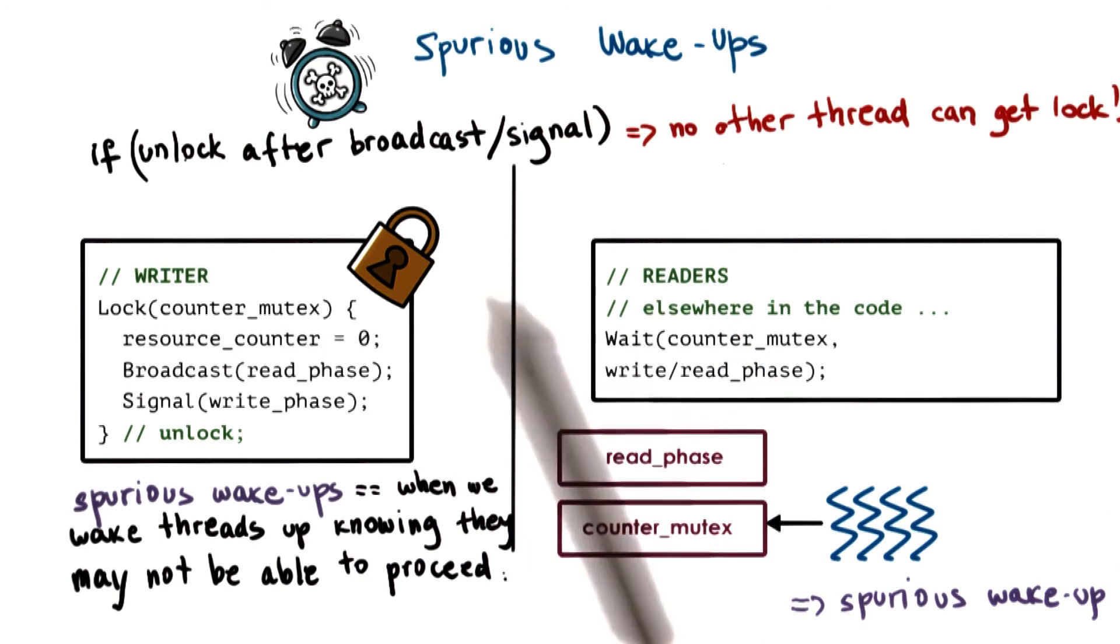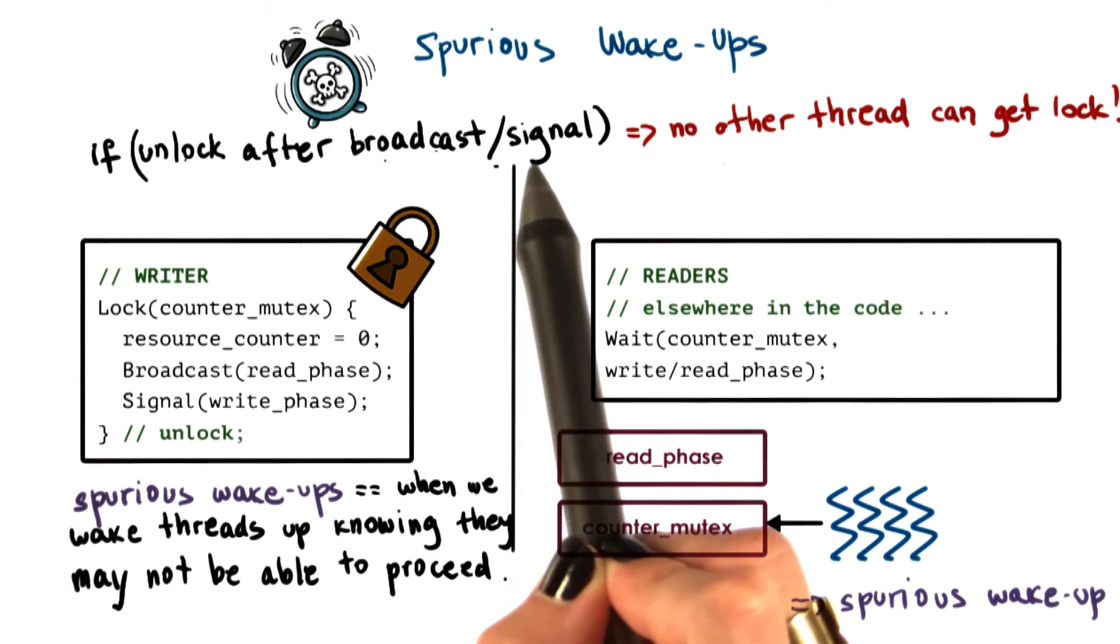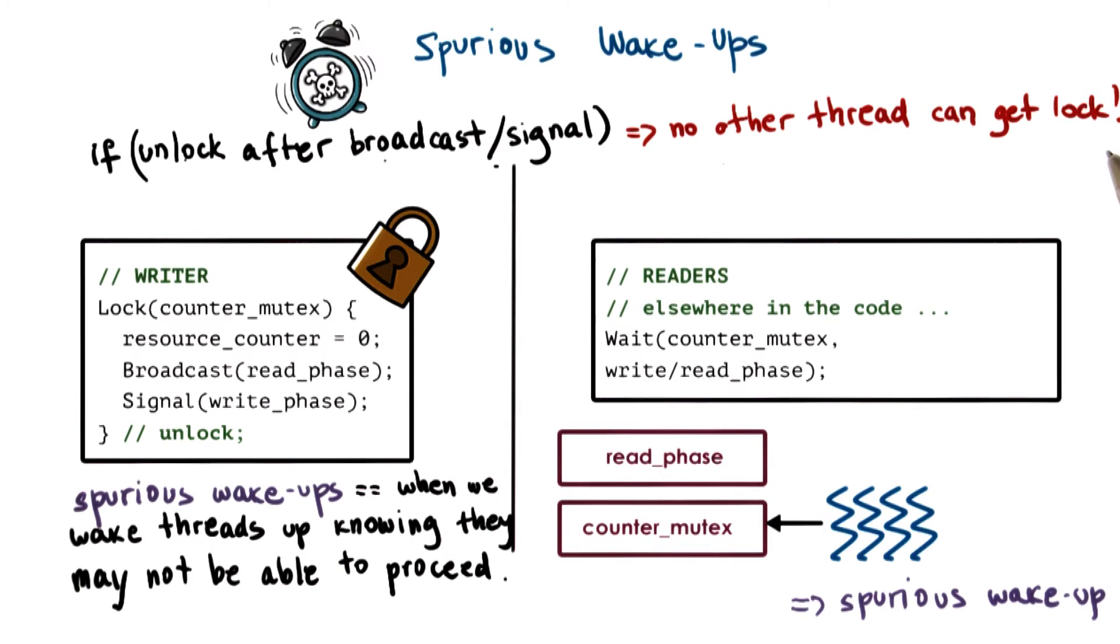wait on the wait queue. The problem is that when we unlock only after we've issued the broadcast or the signal operation, no other thread will be able to get the lock.